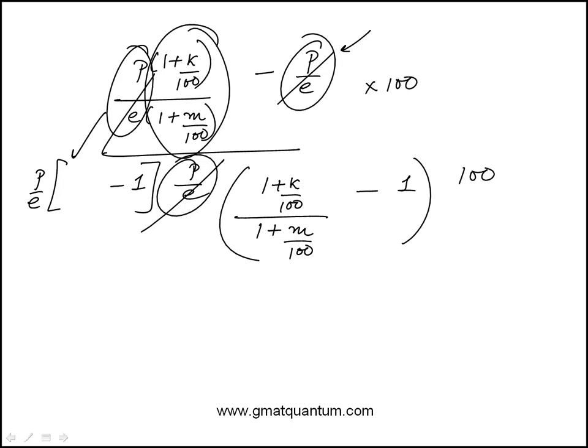And then we just have to simplify this. Again, I'm going to multiply both numerator and denominator by 100. And this would become 100 plus K. Again, in the exam, I would not write this step, but just do 100 plus K over 100 plus M minus 1 times 100. And then the denominator would be 100 plus M.